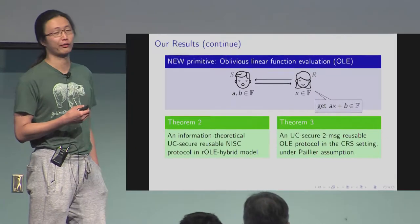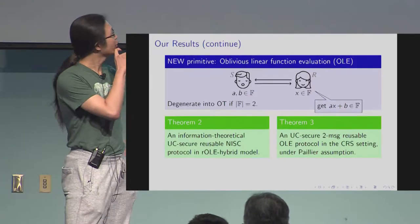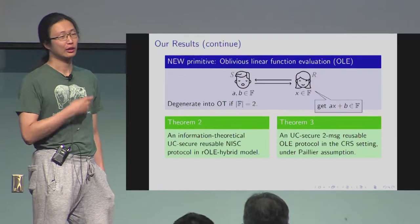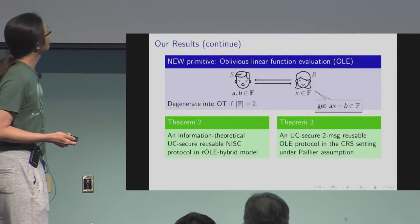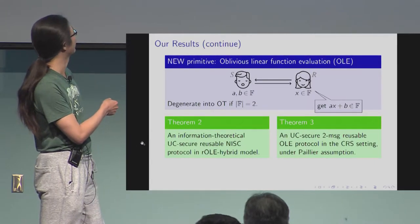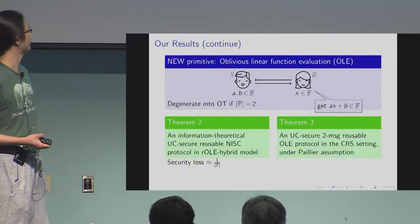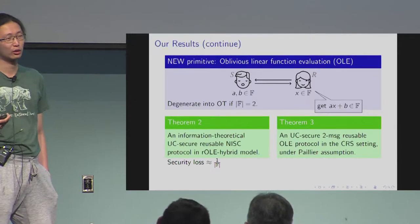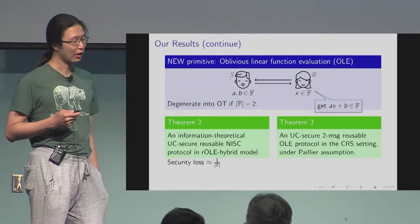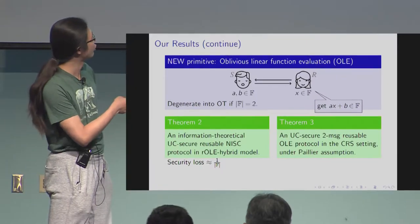Of course, we also need to construct such a protocol. We use a Pallier assumption, mentioned later, in the CRS model, where CRS means common reference string — so we need a trusted setup. If you consider the binary field, then OLE is actually equivalent to OT. This kind of contradicts our previous result — we showed that such a protocol is impossible in the OT hybrid model. Therefore, it's not surprising that we need the field to be super large. Our security loss is proportional to roughly one over the field size.